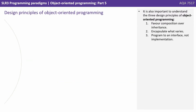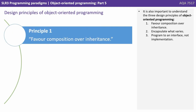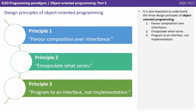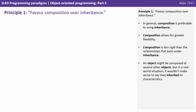It is also important to understand the three design principles of object-oriented programming. One, favour composition over inheritance. Two, encapsulate what varies. And three, programme to an interface, not implementation. So let's look at each of those in turn.